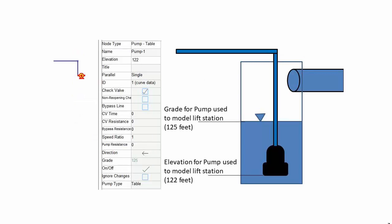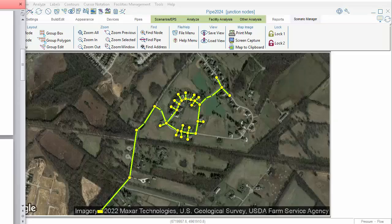A straightforward way to model a lift station is to use a pump node. The pump is assumed to be down in the wet well, and the elevation of the pump reflects this location — for example, 122 feet. The grade represents the elevation of the water level above the pump, which is set in this example to 125 feet, slightly above the elevation of the pump.